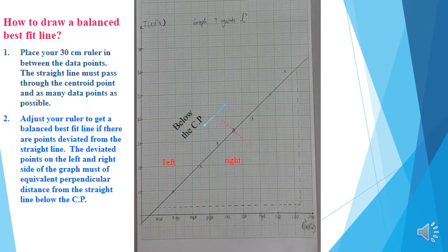How to draw a balanced best fit line? Step 1: Place your 30 cm ruler in between the data points. The straight line must pass through the centric point and as many data points as possible. Step 2: Adjust your ruler to get a balanced best fit line if there are points deviated from the straight line. The deviated points on the left and right side of the graph must have equivalent perpendicular distance from the straight line. Below the centric point, data point 1 on the right side has a deviated perpendicular distance almost the same as data point 2 on the left side — data point 1 balances data point 2.